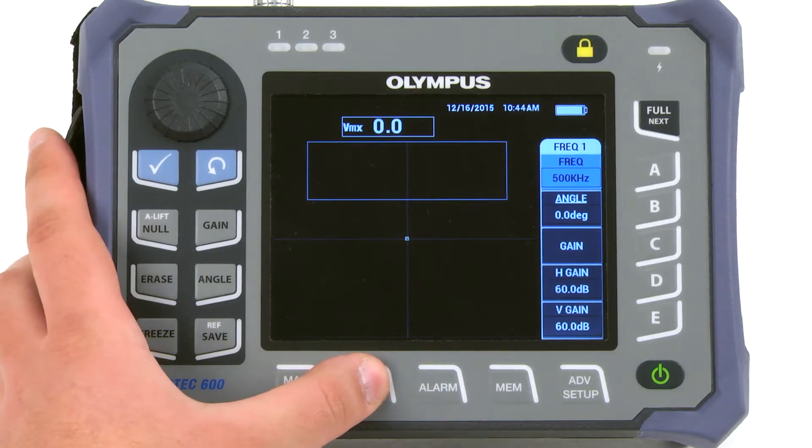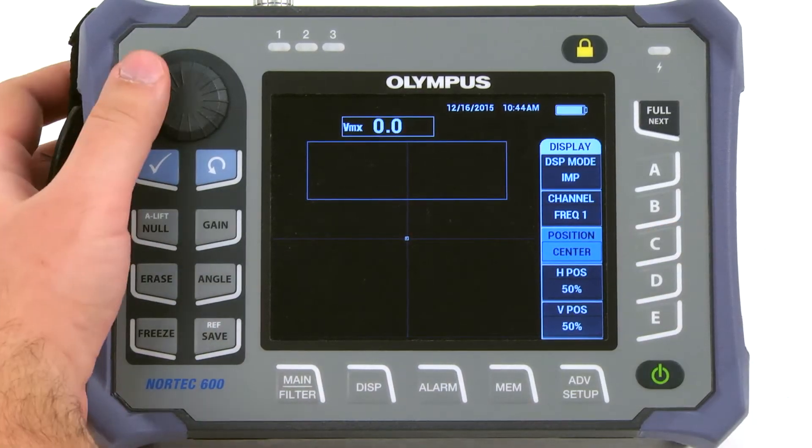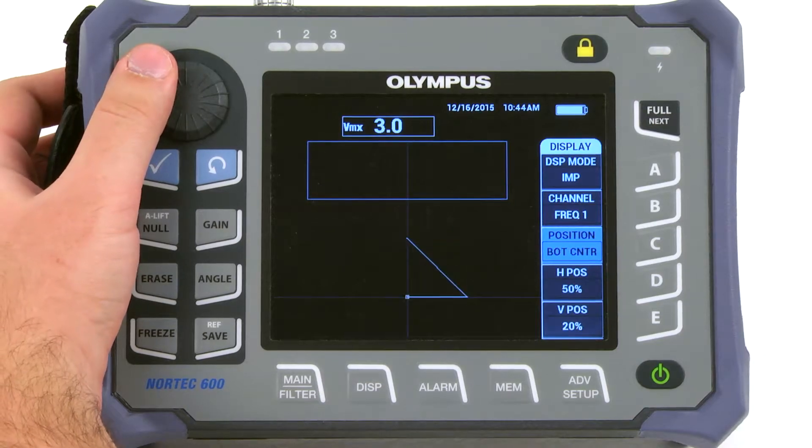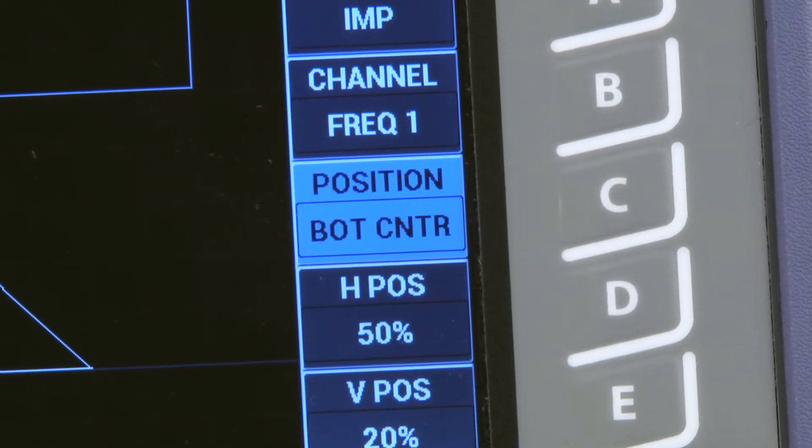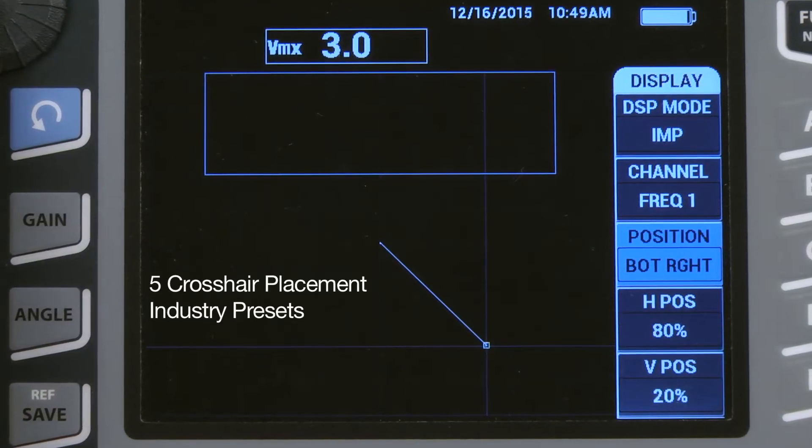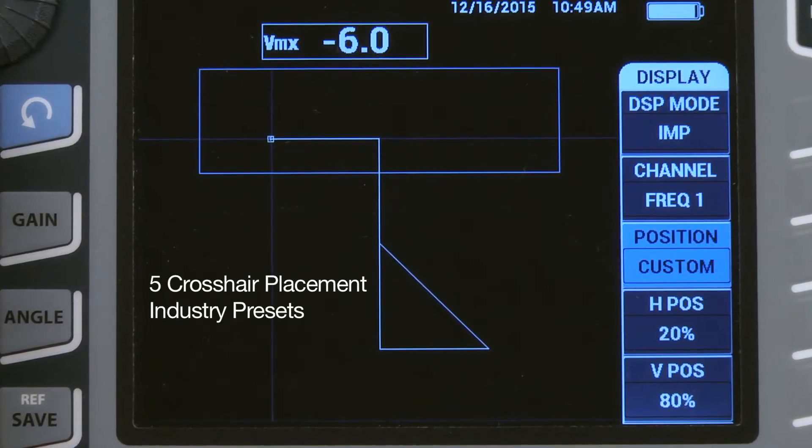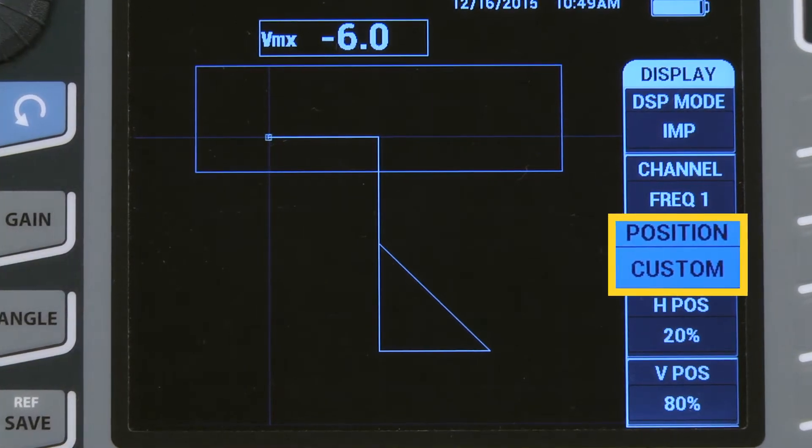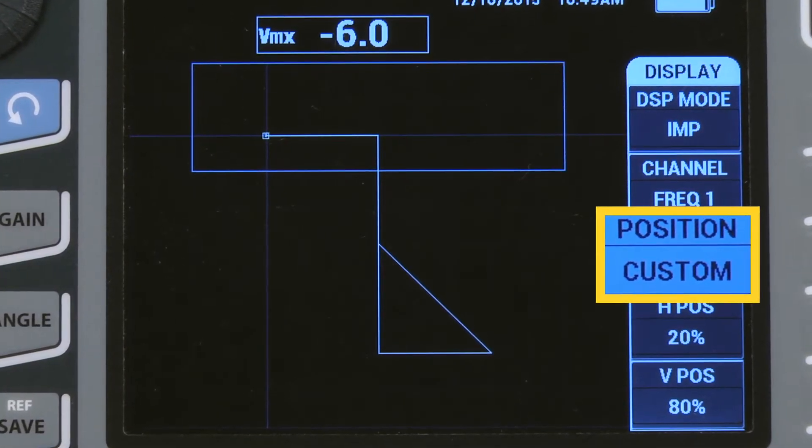Press DISP and move the crosshair using the C key, which is a position option. We will set the position to bottom center by using the knob. There are five commonly used industry presets to facilitate the placement of the crosshair. A sixth preset is available for user customization.